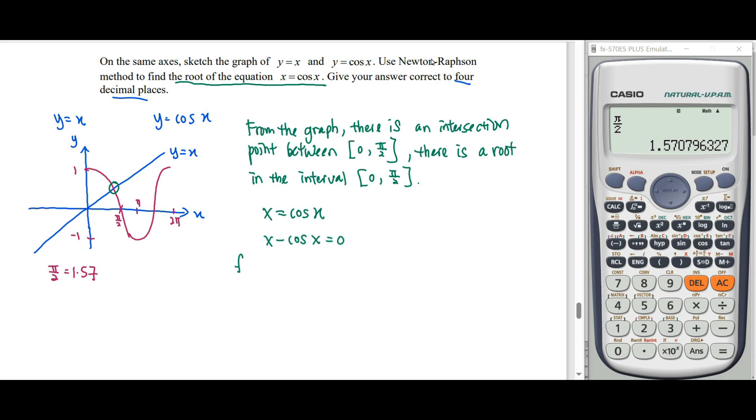Here will be our function: f(x) = x minus cos x. What we need in the Newton-Raphson method is the differential function. Differentiating x we get 1, differentiating cos x we get negative sine, so f'(x) = 1 plus sin x.